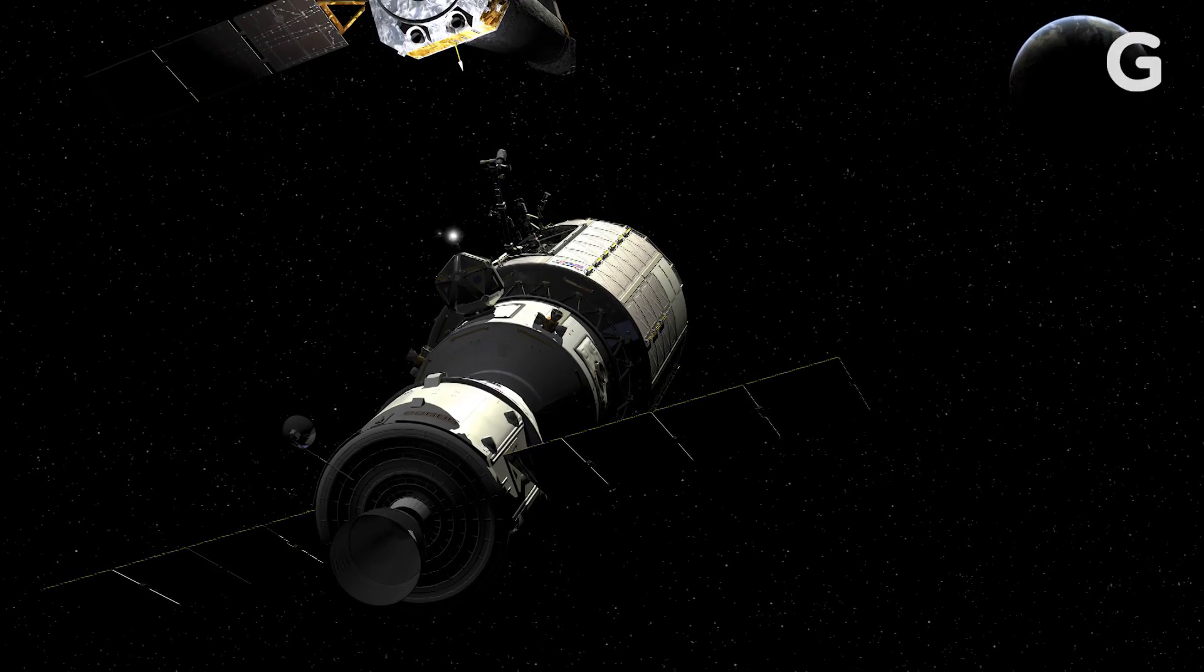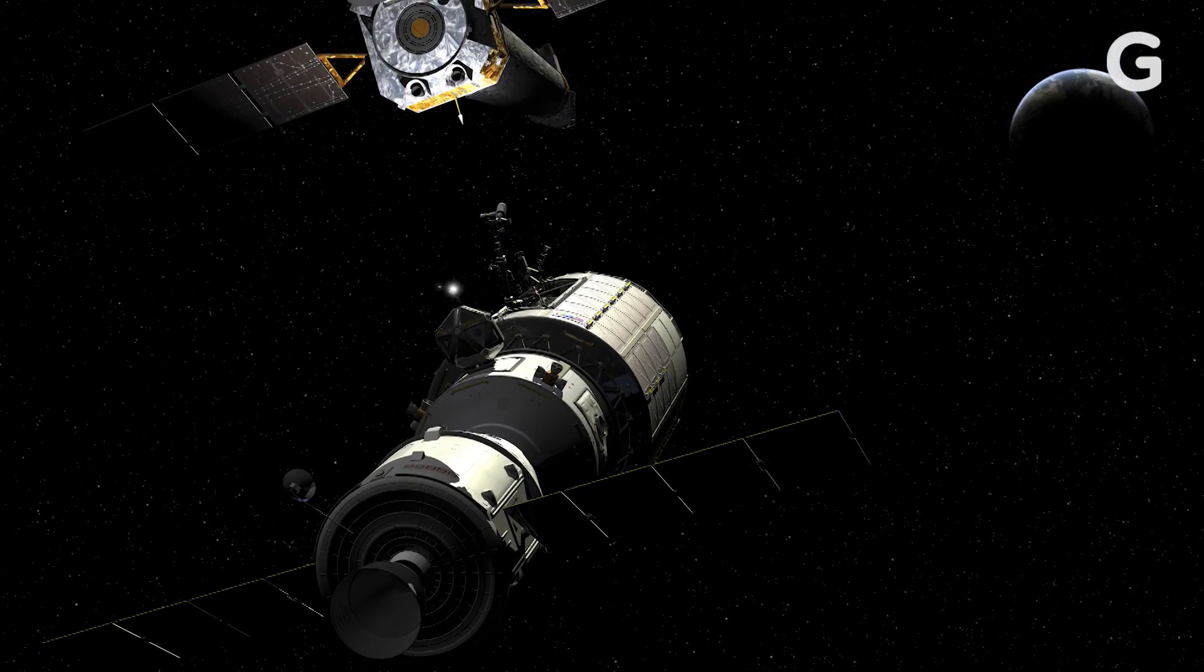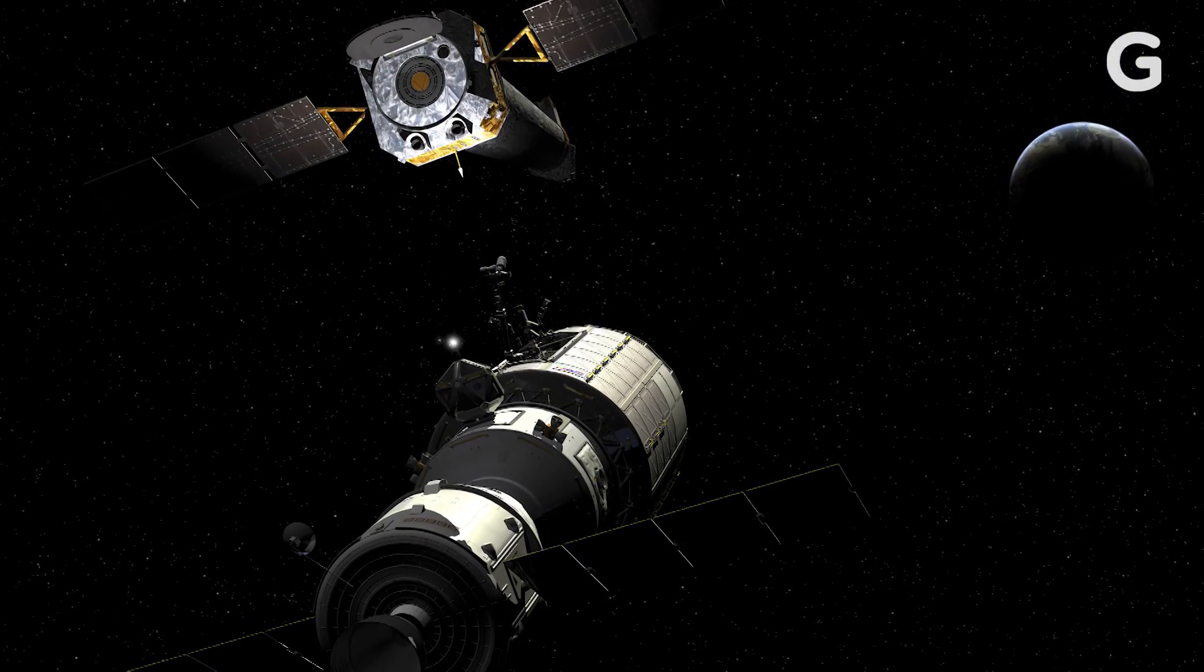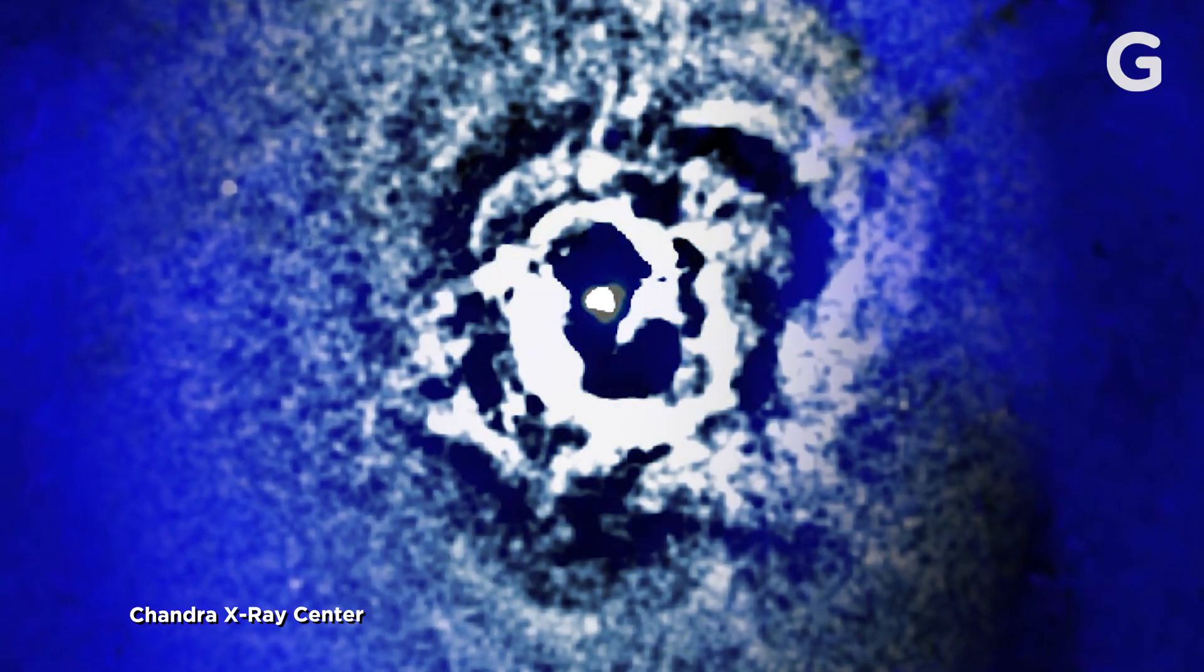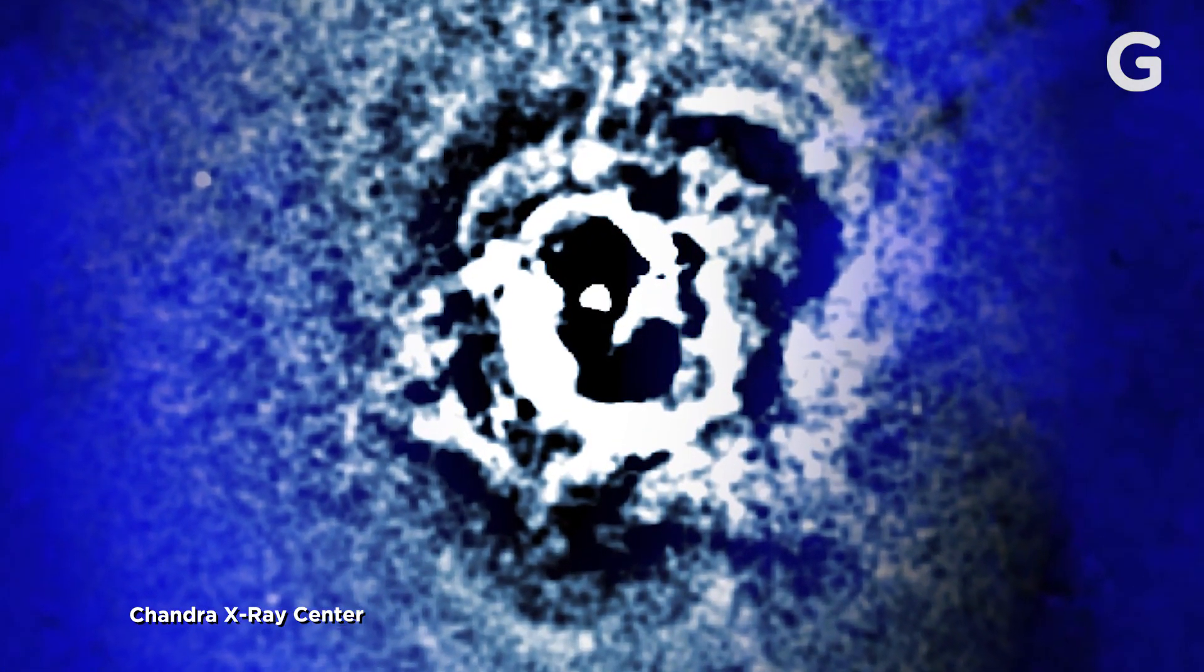To figure this out, we use telescopes, and in particular we use X-ray telescopes. The Chandra X-ray Observatory, which has been in space for over 20 years now, it is a great tool for looking at galaxy clusters and studying the temperature structure, so seeing what parts are hotter, what parts are cooler, where is the energy being lost.